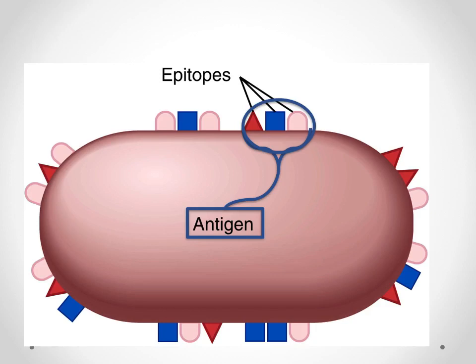The antigen is any cell membrane component that indicates 'I belong here, I should be here.' Within the antigen, there are distinct areas known as epitopes, and those epitopes are going to distinguish each of the antigen markers within each of the various cells and possible pathogens that the immune cells are going to be interacting with.